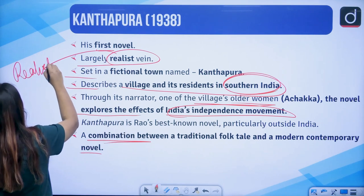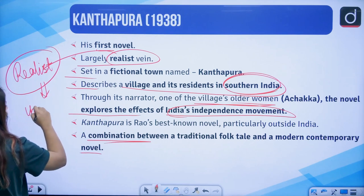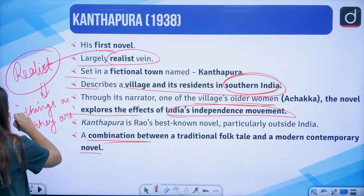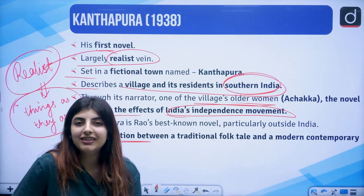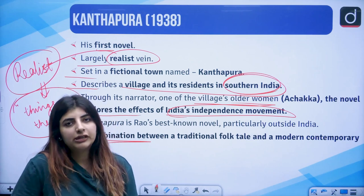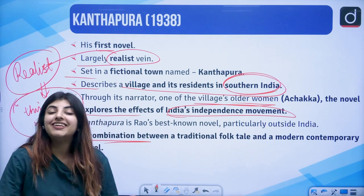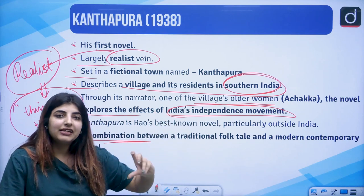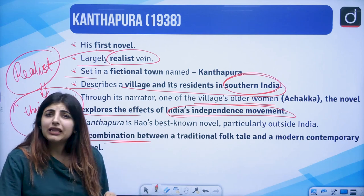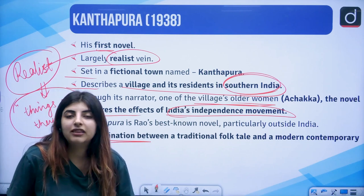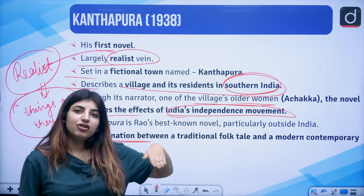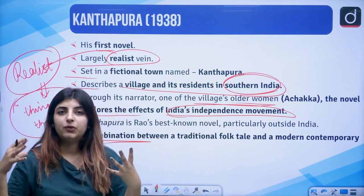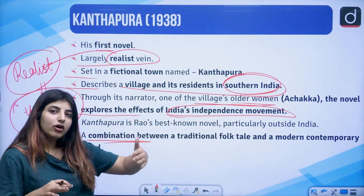Rao wrote this novel in a largely realist vein. Realism talks about things as they are, and it has a modernist stance because most modernist novels were influenced by the movement of realism — that is the modern element. The traditional folk tale element is that the tales he weaves in Kanthapura are influenced by the Puranas. So the amalgamation of the traditional — the Puranas — along with the reality of India: the nature of people, the way they talk, the way they behave — that is realist. Modern plus traditional elements.